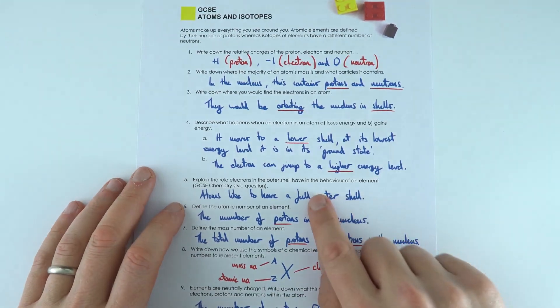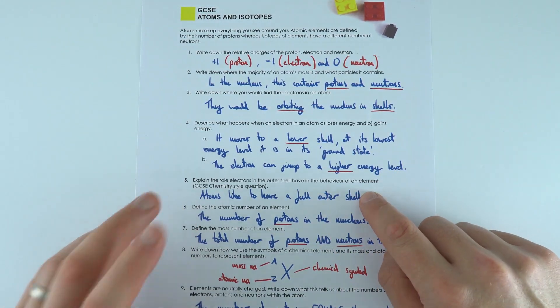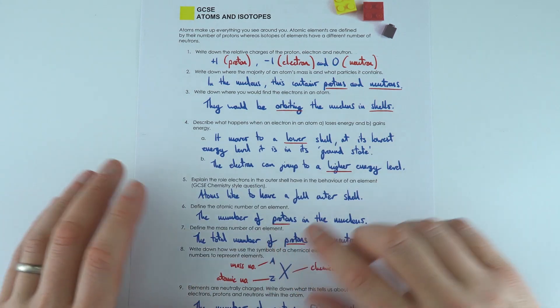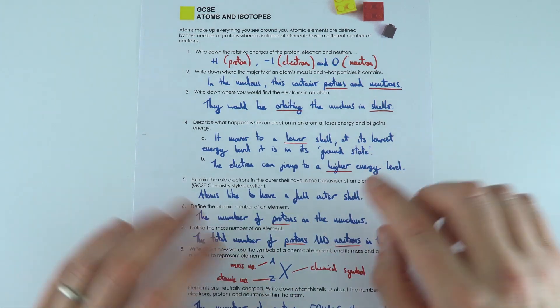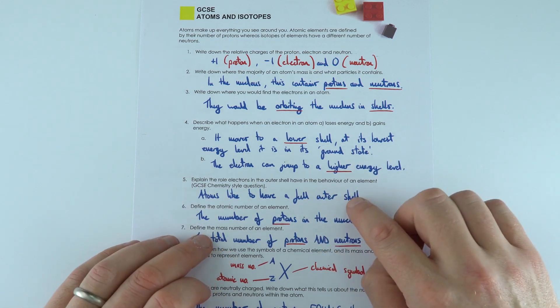Atoms like to have a full outer shell. This is why in chemistry they're always going on about ionic or covalent bonding - things are losing or gaining electrons to get a full outer shell, or maybe they're just sharing them.